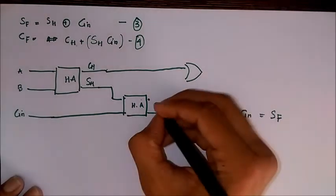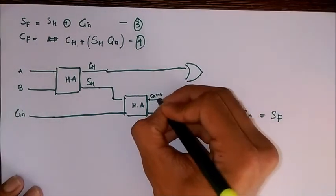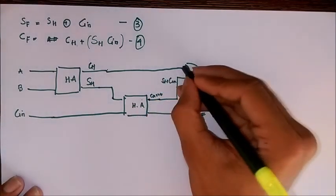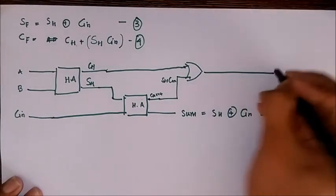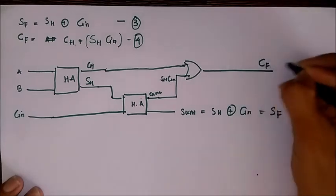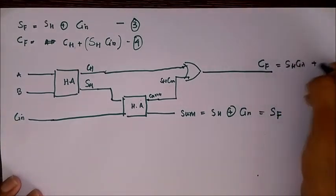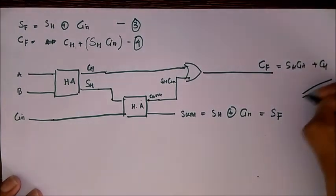So here the carry obtained is SH Cin. So SH Cin plus CH will be the carry of our full adder. SH Cin plus CH. So this is how you establish a full adder using two half adders.